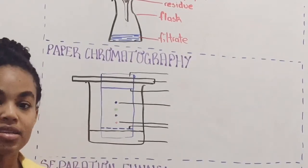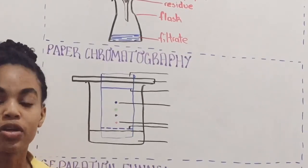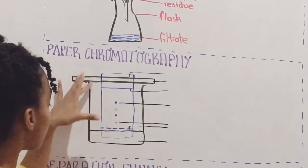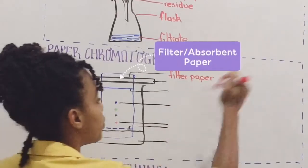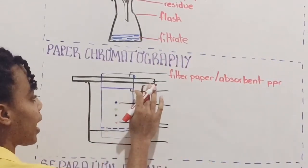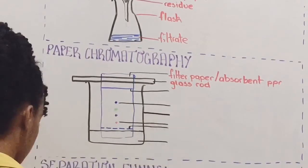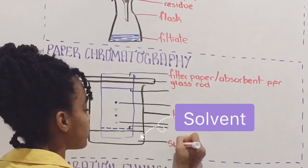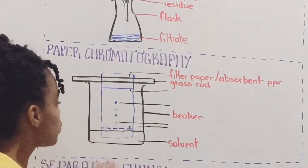Different colored solutes are dissolved in a solvent, like the inks in pens. When you use paper chromatography, you can separate the different colored solutes. We're going to label this diagram now. What we have here outlined in blue is our filter paper — or you can also call it absorbent paper. We also have the absorbent paper hanging on a glass rod. Here we have a beaker with our solvent.